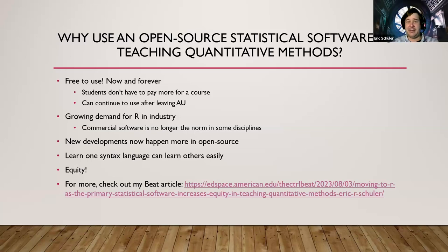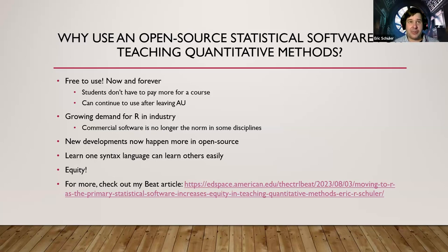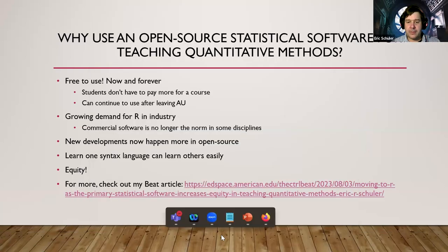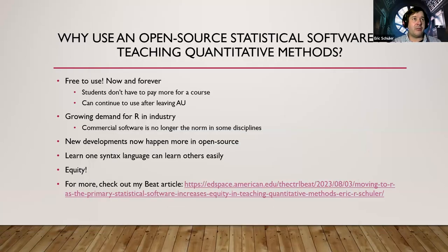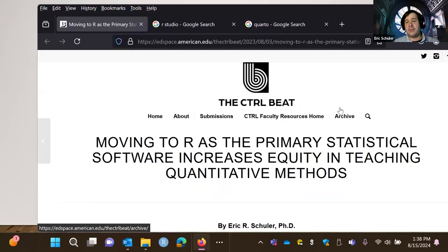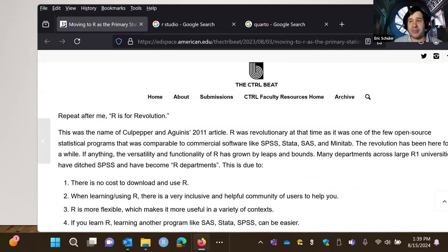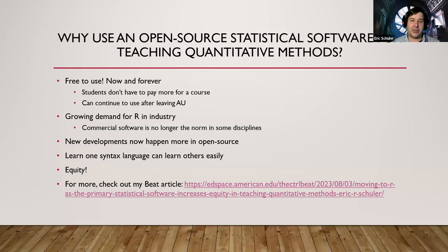Knowing SAS, you'll pick up R pretty easily, and from knowing R you'll pick up Stata really quick. If you know a syntax language, it becomes quite easy to pick up others. Also just for equity — not having to pay anything, being able to download it and use it at any time — I think it's really powerful. I also wrote a blog article about moving R as a primary statistical software for teaching for equity. Happy to share that link. If you haven't noticed, I am a huge advocate for open source — all my workshops are open source geared.